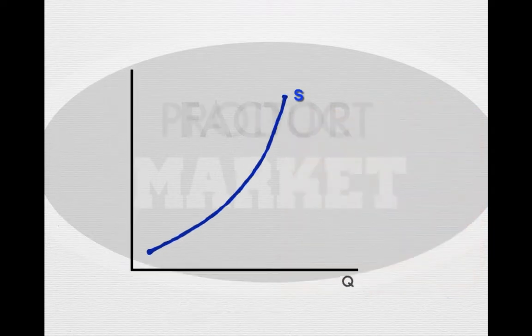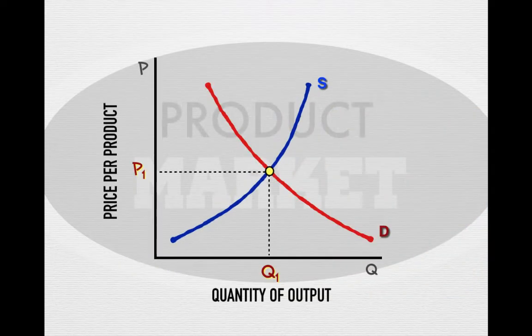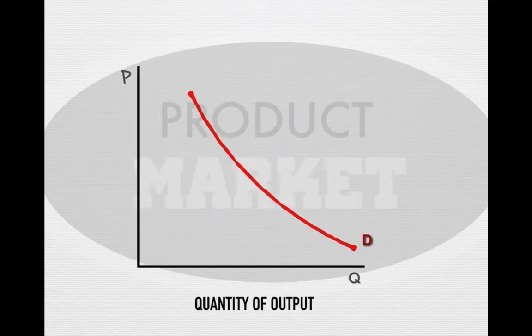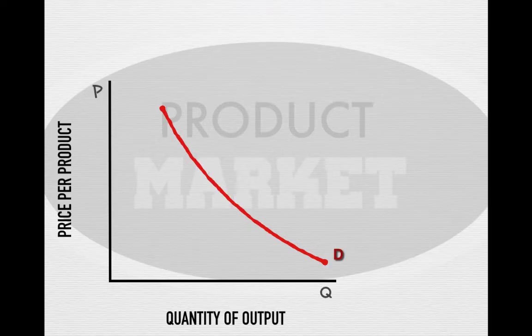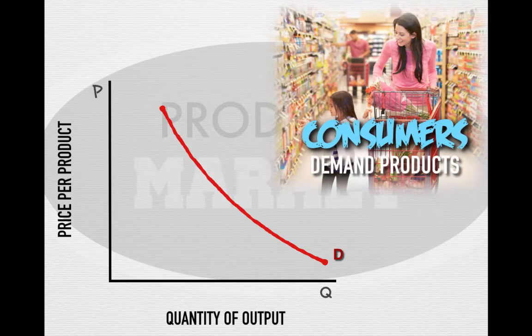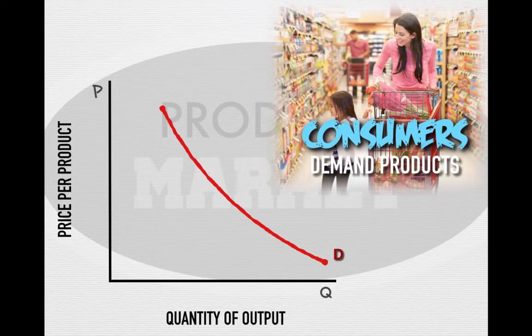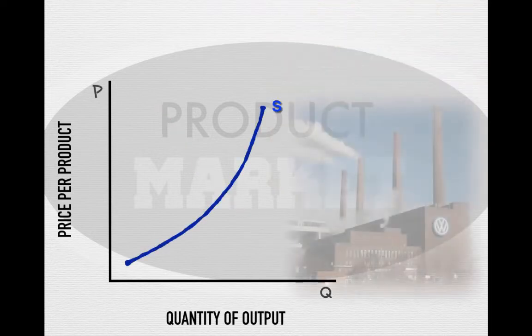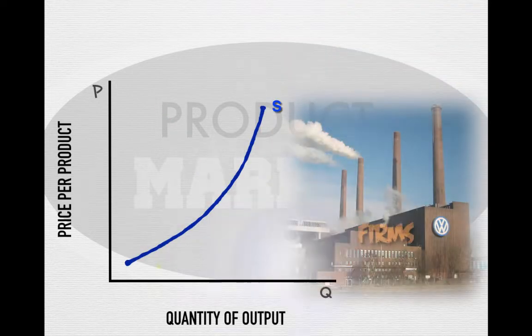Consumers supply inputs for a wage so they can gain income to purchase goods and services in the product market. The product market graph is set by price per product and the quantity of output available. Natural market forces set an equilibrium price at P1 and quantity of output at Q1. In the product market, consumers demand goods and services to maximize their utility, while firms supply goods and services to maximize their profit and compete with other firms.